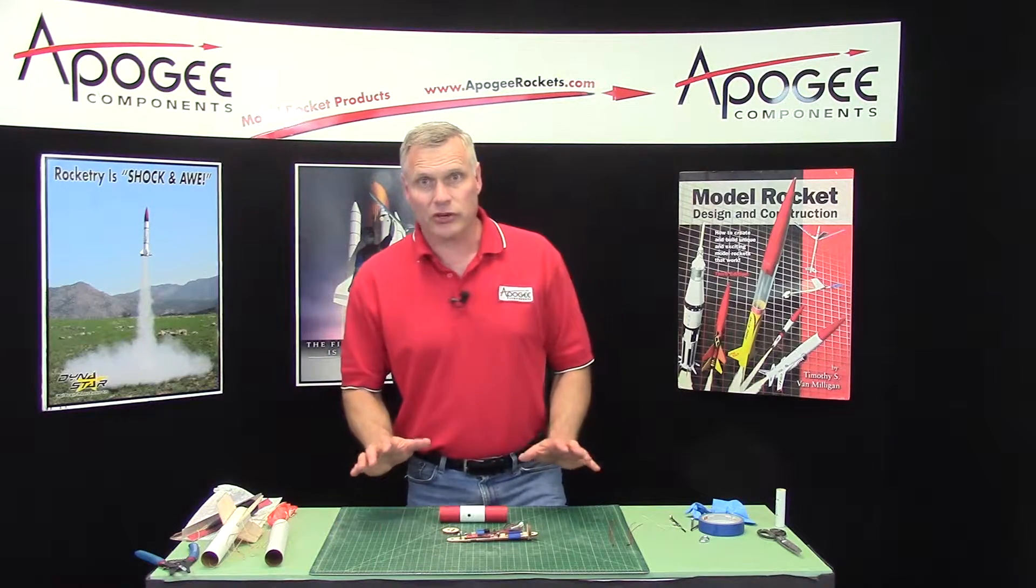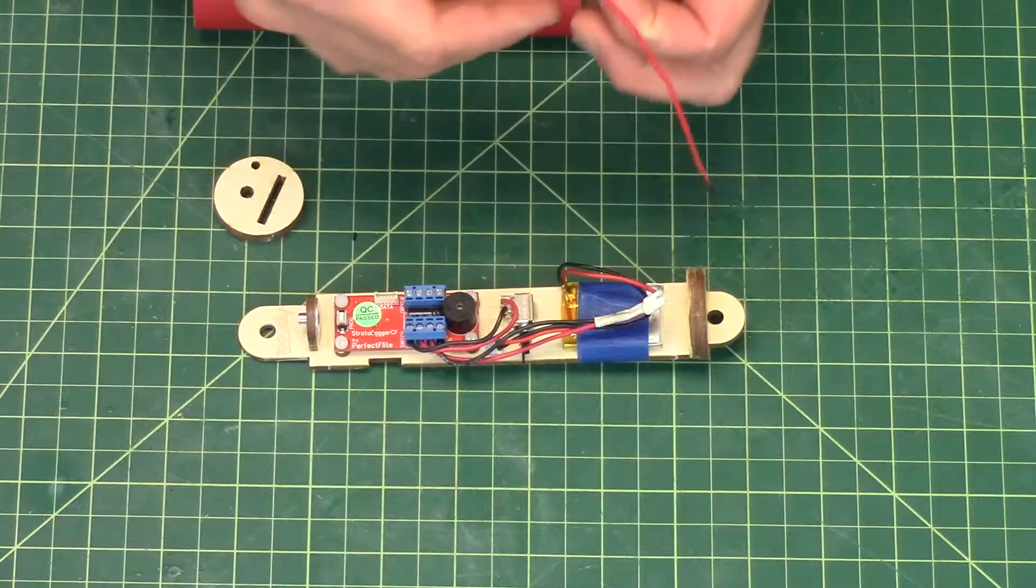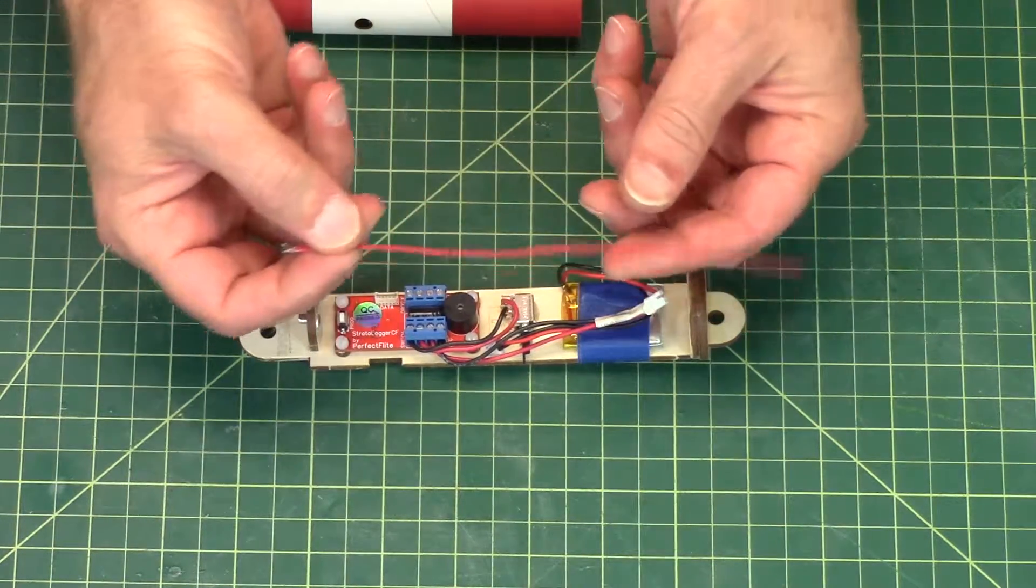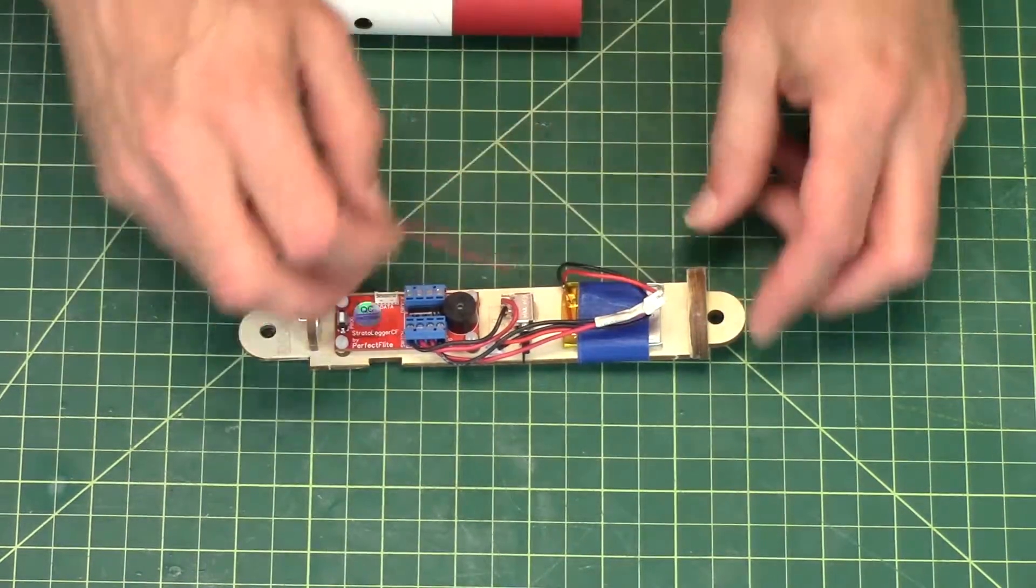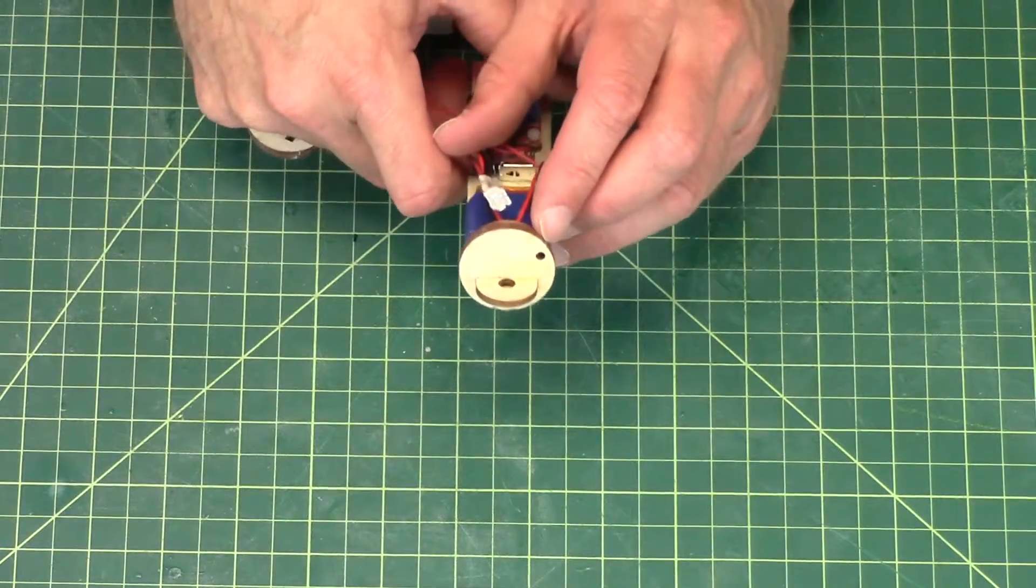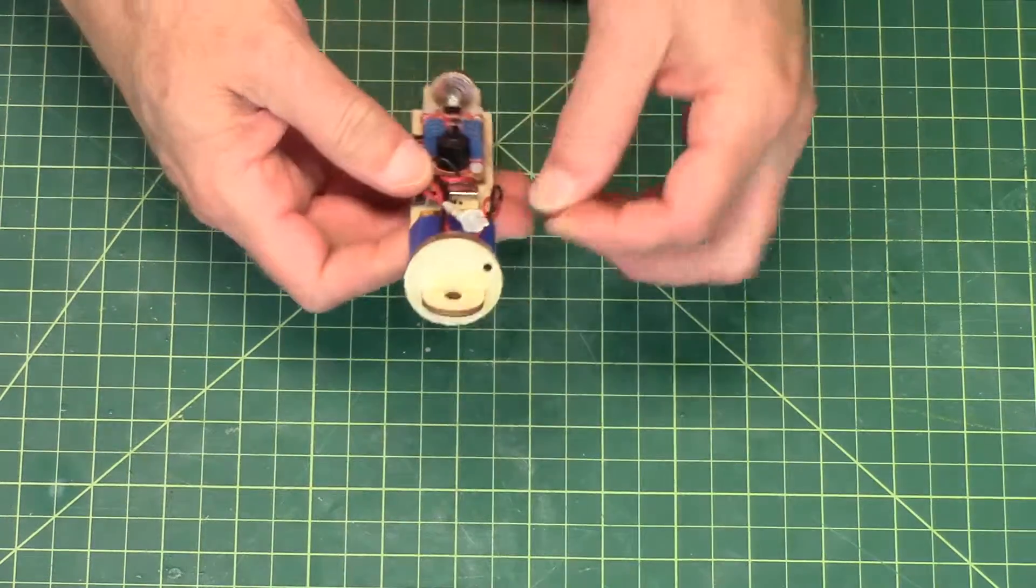In this next step we're going to install the igniters and the ejection canisters. So the igniters are these and they need to be long enough to get outside the rocket. And if you notice on the end of the bulkhead there's a hole and that's where the igniter comes out.